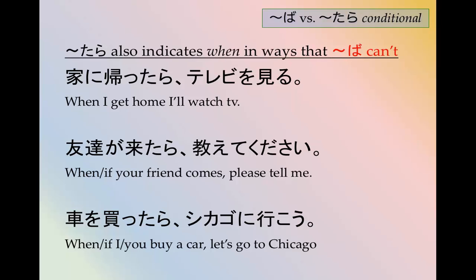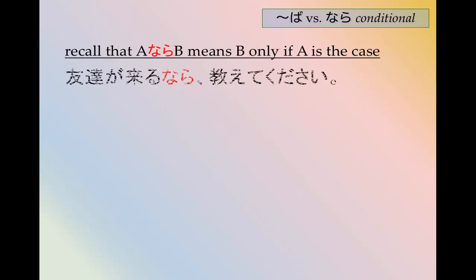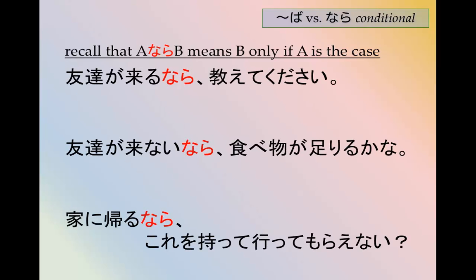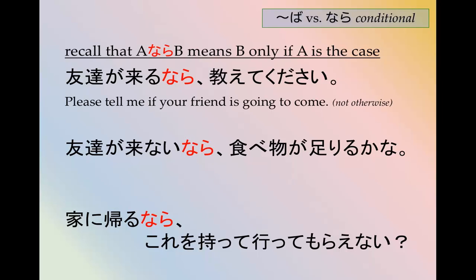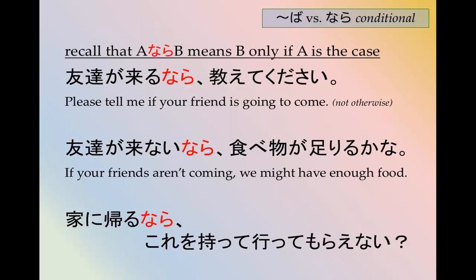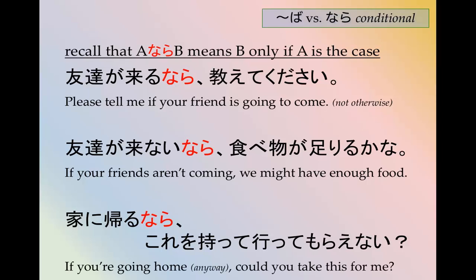There's also なら, which we've studied. A なら B means B only if A is the case. 友達が来るなら教えてください — please tell me if your friend is going to come, but don't tell me otherwise. 友達が来ないなら食べ物が足りるかな — if your friends aren't coming, we might have enough food. 家に帰るならこれを持っていってもらえない — if you happen to be going home, could you take this for me?